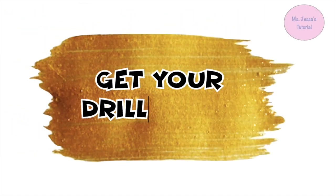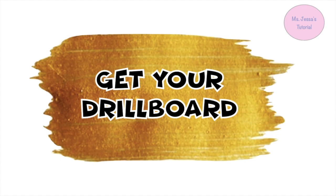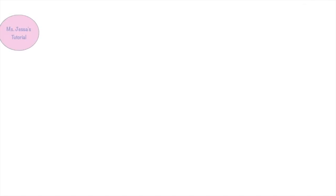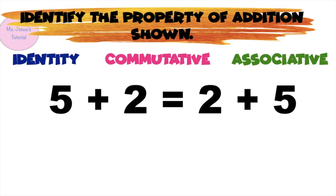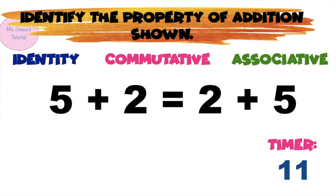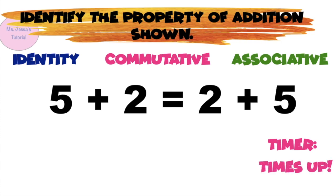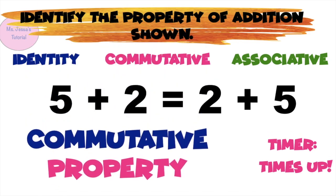Now get your drill board. Using your drill board, identify the property of addition shown. Write identity, commutative, or associative. Are you ready? Let's begin. If you have 5 plus 2 is equal to 2 plus 5, what property of addition is shown? Timer starts now. Time's up. What property of addition is shown? Very good — that is commutative property!